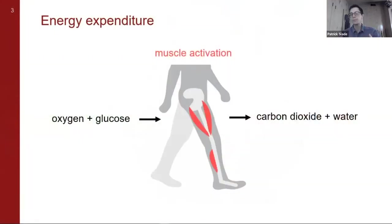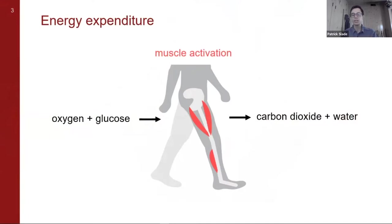From a whole body perspective, this energy is expended by muscles when a person moves. Most active energy expenditure occurs during aerobic activities like walking, running, or biking. So we'll focus on capturing this energy expended during these active aerobic activities.